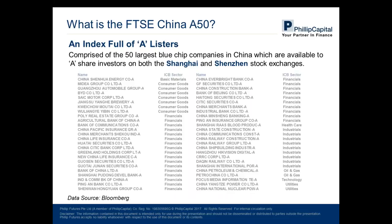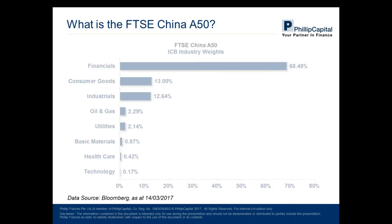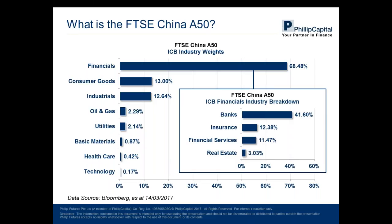The ICB industry weights show financials as the heavy weight of this index, coming in at close to 70%, while consumer goods, industrials, oil and gas, etc. make up the rest. To do a deeper dive into financials: banks are the ones driving the financials, which in turn drive the index — along with insurance, financial services, and real estate. So if there's a big move in the index, most of the time financials are the main culprits. The financial sector is extremely volatile due to regulatory factors — Chinese regulators have recently been clamping down on speculative trading, particularly in the insurance industry.